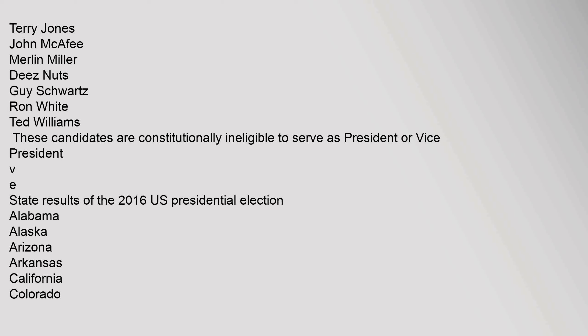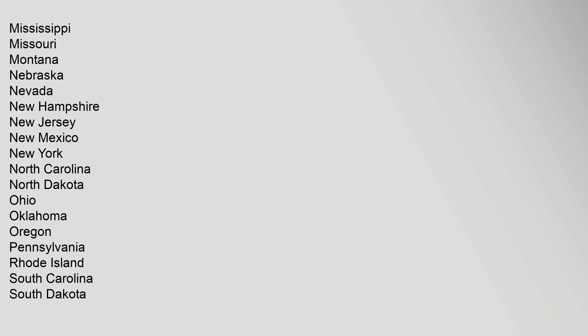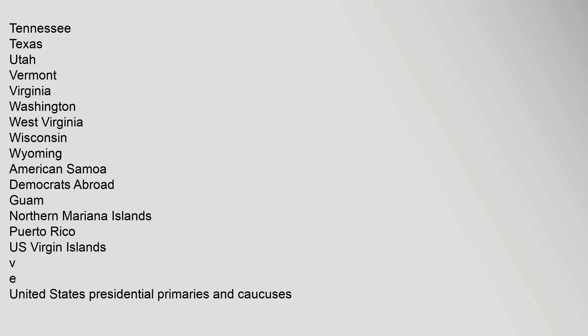State results of the 2016 U.S. Presidential Election covered all 50 states and territories, including Alabama, Alaska, Arizona, Arkansas, California, Colorado, Connecticut, Delaware, District of Columbia, Florida, Georgia, Hawaii, Idaho, Illinois, Indiana, Iowa, Kansas, Kentucky, Louisiana, Maine, Maryland, Massachusetts, Michigan, Minnesota, Mississippi, Missouri, Montana, Nebraska, Nevada, New Hampshire, New Jersey, New Mexico, New York, North Carolina, North Dakota, Ohio, Oklahoma, Oregon, Pennsylvania, Rhode Island, South Carolina, South Dakota, Tennessee, Texas, Utah, Vermont, Virginia, Washington, West Virginia, Wisconsin, Wyoming, American Samoa, Democrats Abroad, Guam, Northern Mariana Islands, Puerto Rico, and U.S. Virgin Islands.